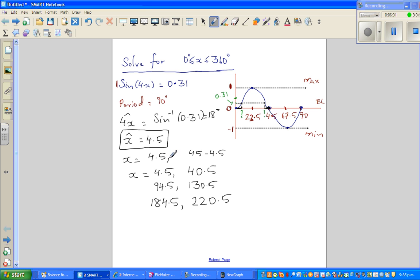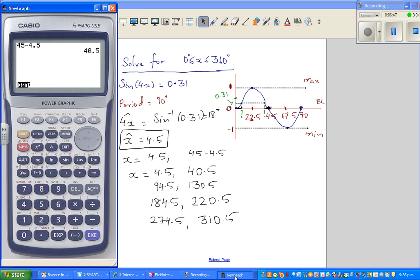So if it was x, you have 2 answers. So you have 8 answers here. Plus 90 is 274.5, and this would be plus 90, which is 310.5. So let's check this on the calculator.